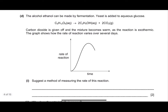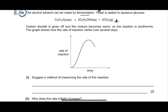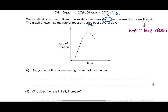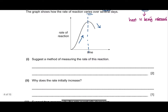This is a question from the Specimen Paper 2020, question 8D. The alcohol ethanol can be made by fermentation — yeast is added to aqueous glucose. Carbon dioxide is given off and the mixture becomes warm as the reaction is exothermic, meaning heat is released. The graph shows how the rate of reaction varies over several days — high at the beginning, then decreasing. The first part asks you to suggest a method of measuring the rate of reaction.